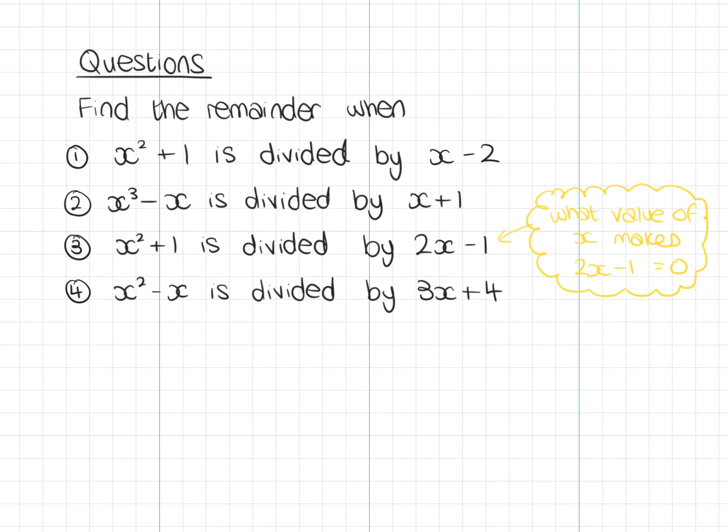Some answers then, if you've had a go at these. So, for number 1, you should have worked out f of 2, and that gave you 5. For number 2, you should have worked out f of minus 1, and that gave you 0. So, that one's a factor. For 3, we should have worked out f of a half. My hint was above, we need to work out what value makes that 0. So, 2x minus 1, the value that makes it 0 is a half. And that gave us 5 over 4. And for the last one, question 4, similar to the one above, what value of x would make that 0? That's going to be minus 4 over 3. If I put minus 4 over 3 into x squared minus x, I get 28 over 9 as my remainder.